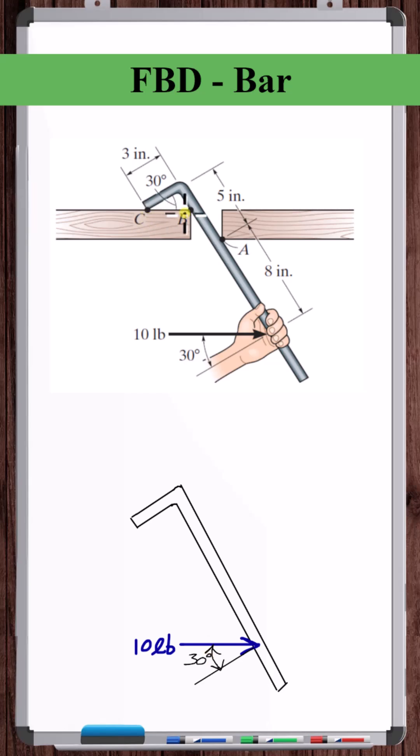These points of contact between the wood and the bar are assumed to be smooth contact points, which means that these contact forces won't have any component parallel to one of the contact surfaces. So the force at point C will be vertical.